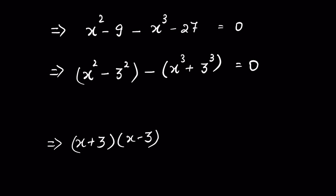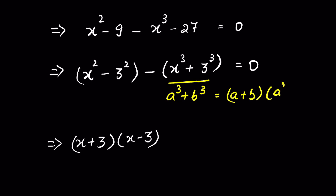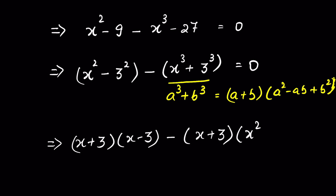And x³ minus 3³ is in the form of a³ minus b³. Using the algebraic identity, we can write it as (x + 3)(x² minus 3x + 3²). So the full expression becomes: (x + 3)(x − 3) minus (x + 3)(x² − 3x + 9) is equal to 0.